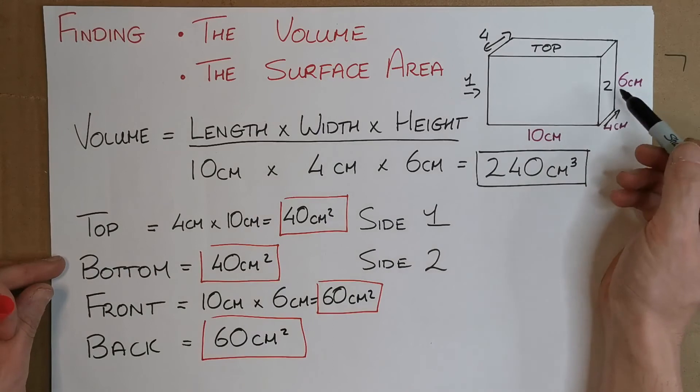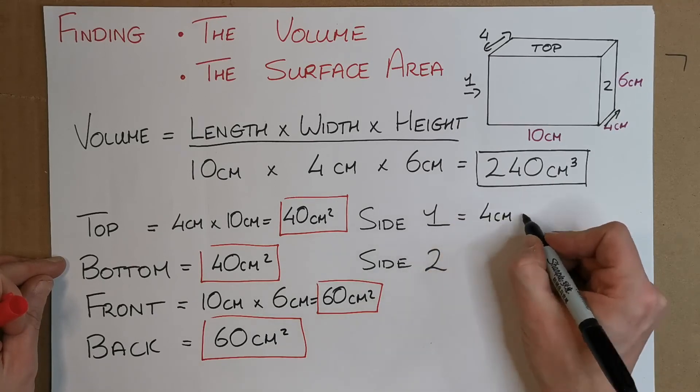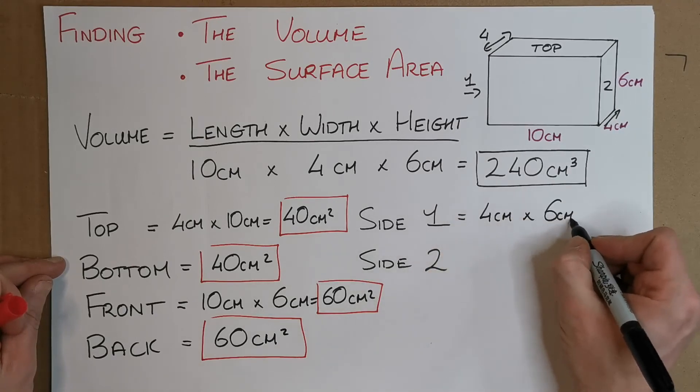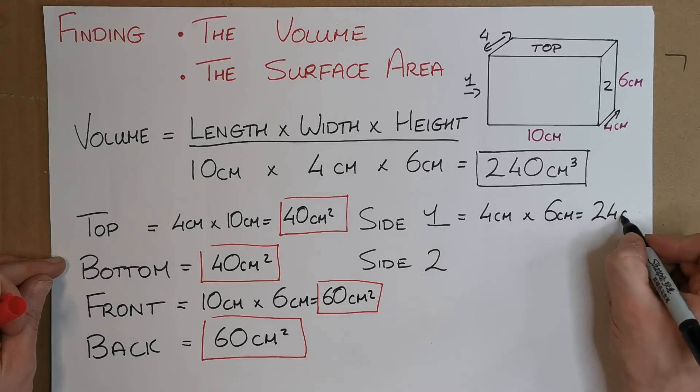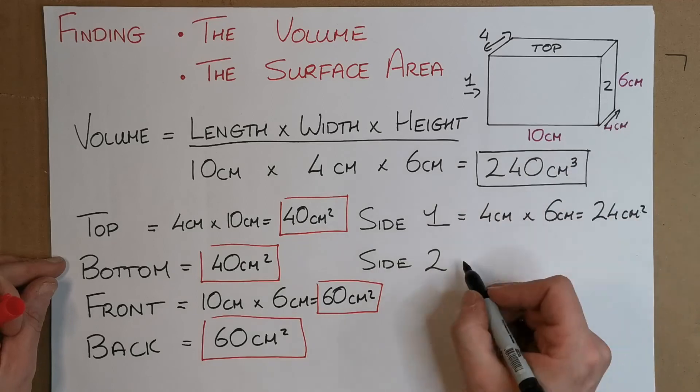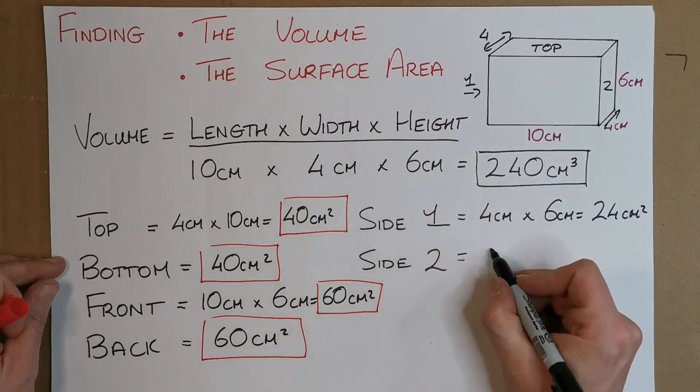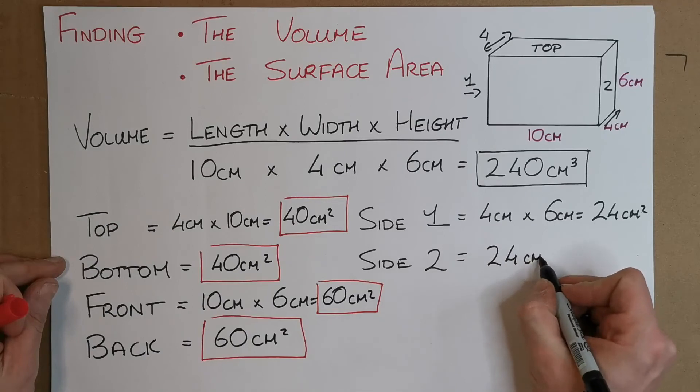Now side one and side two. So let's look at side two because we can clearly see that. So it has a width of 4 and a height of 6, so it's simply just 4 centimeters by 6 centimeters, which gives us 24 centimeters squared. And it turns out that side two and side one are the same. I actually put side two in for side one, but they're both the same.